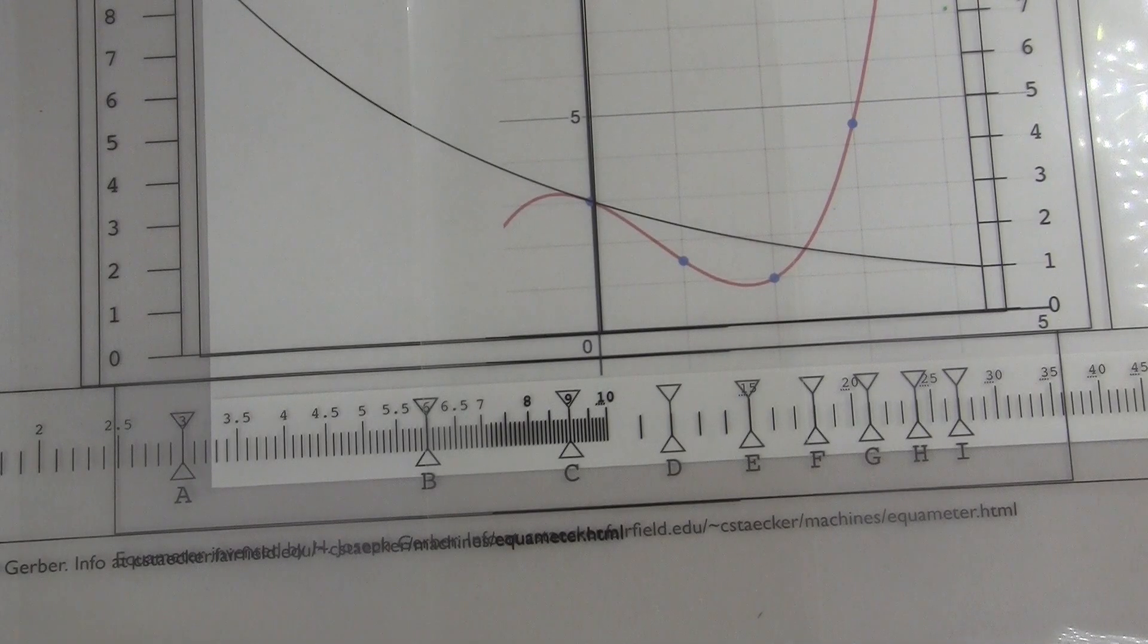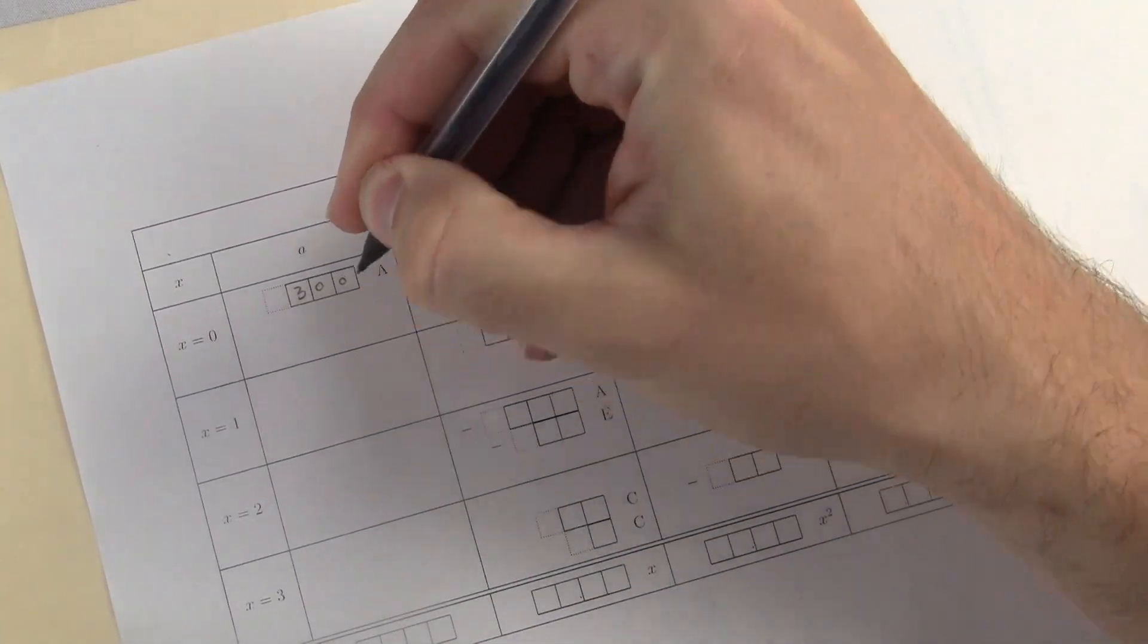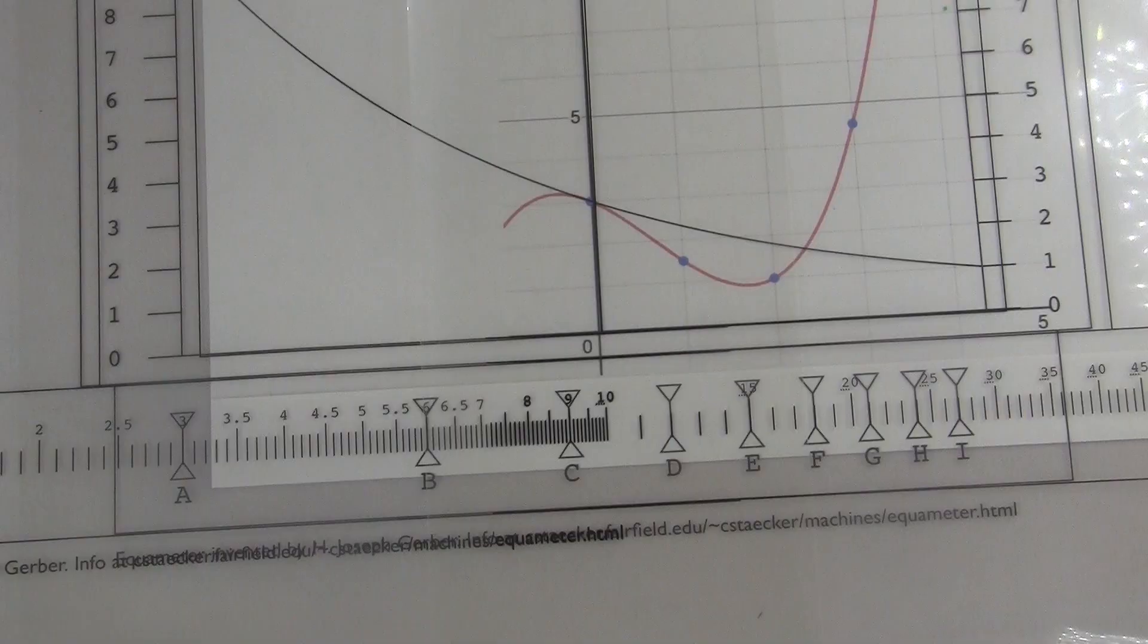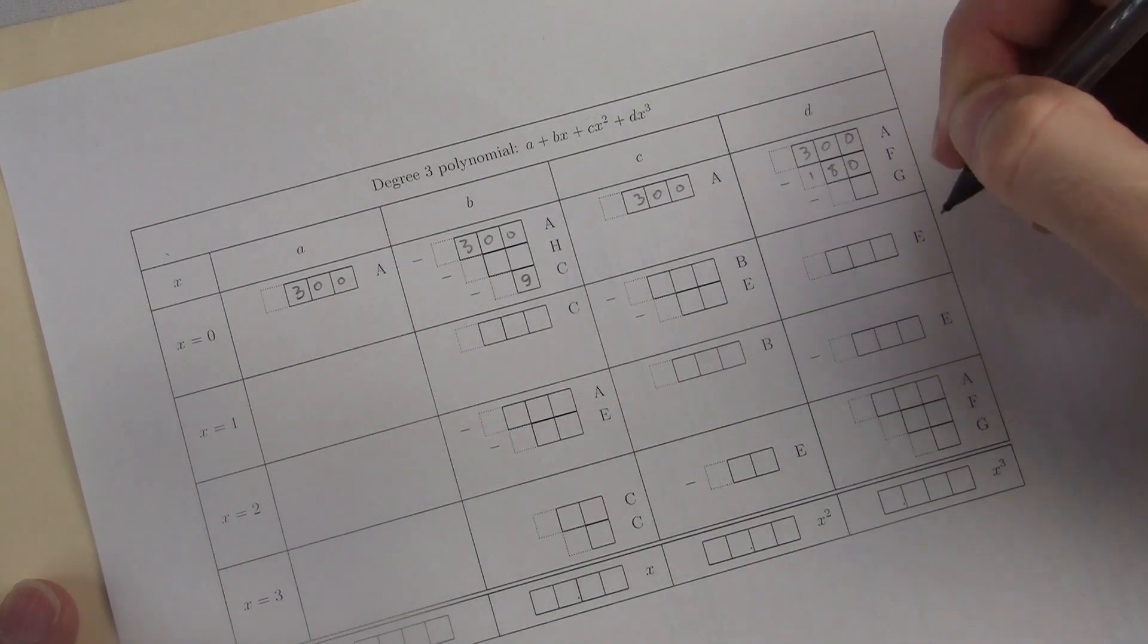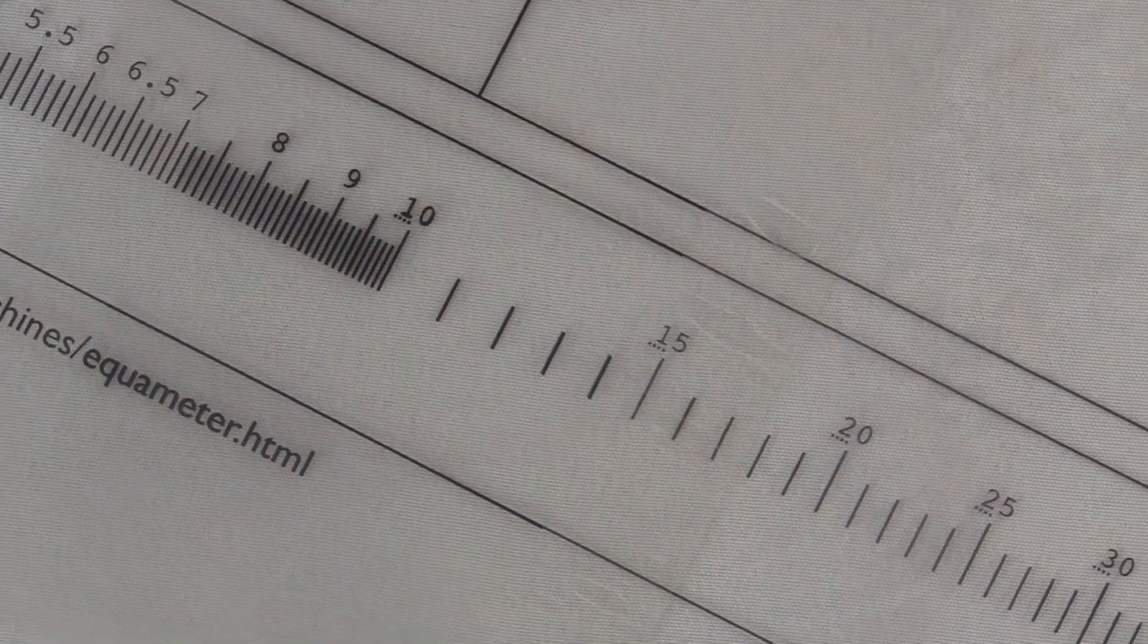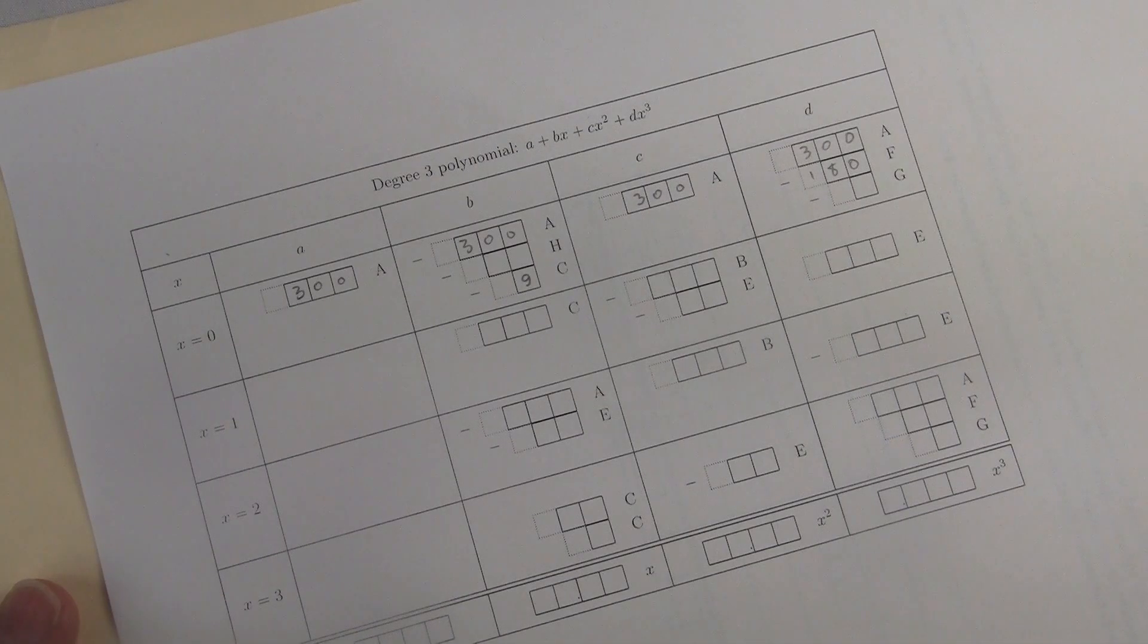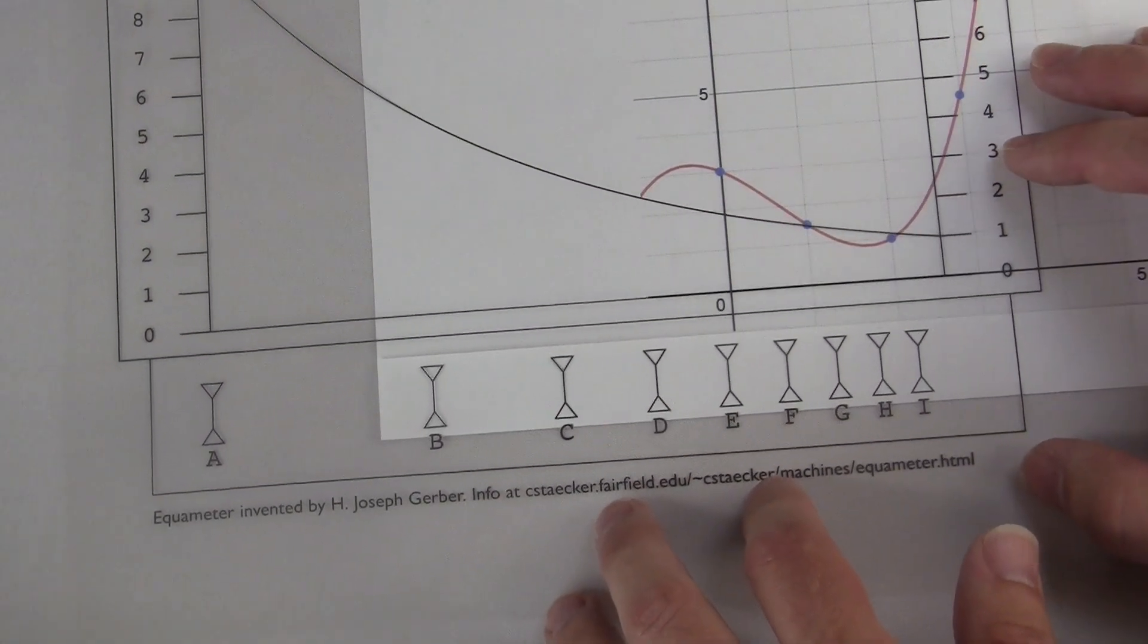And these are the values that you're going to fill in on the worksheet. So the a value here is 3. So over on the worksheet, I fill in 3 where it says a. Now you've got to fill in extra zeros here. So I'm going to write 3, 0, 0. The C indicator is at a 9. So I put 9 in the boxes by C. The F is at 18. So I fill in 1, 8, 0 at the F. Now on the scale, some digits have a little dotted line under them. That's a reminder to put that digit in the dotted box. Otherwise you always start in the left most solid box. Anyway, you fill in all those values and that's it for x equals 0.